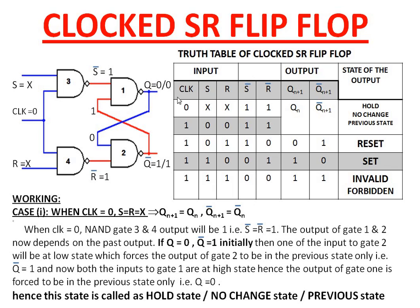The zero at Q is fed back to gate 2. Gate 2 input is low, hence it maintains a high output, meaning Q-bar remains in the same state. This one is fed back to gate 1, so gate 1 has two high inputs, which keeps its output at zero. Hence, when clock is zero, the flip-flop will not operate — it will be inactive and enter into latch or hold mode. This state is called the hold state, no-change state, or previous state.